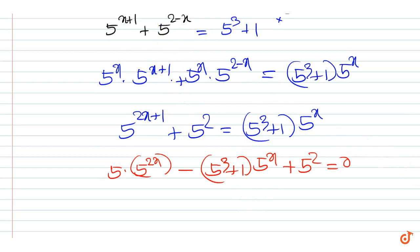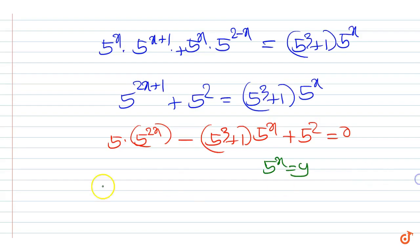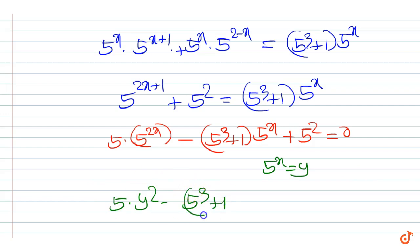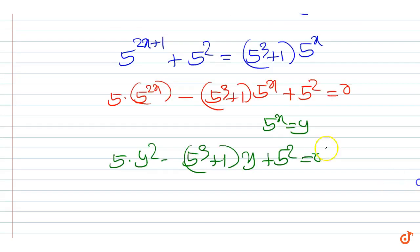This is a quadratic in 5 to the power x. Let 5 to the power x equal y. Then we can write 5y squared minus (5 cubed plus 1)y plus 5 squared equals 0.